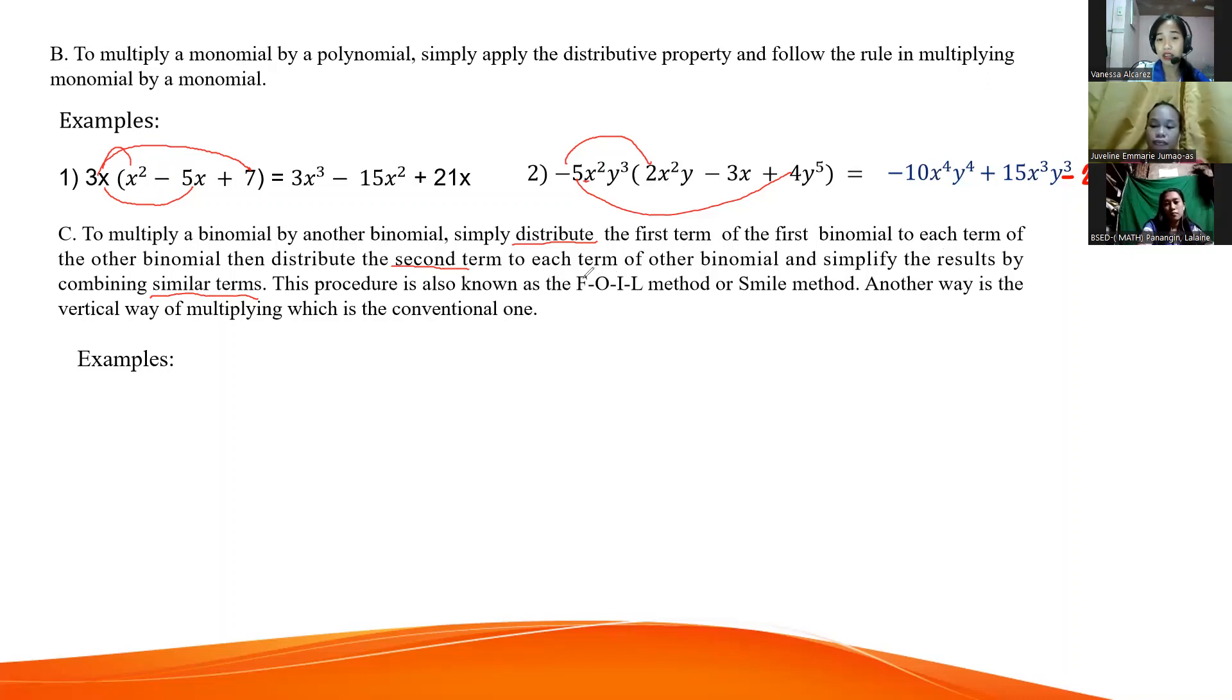The FOIL method - F stands for first, O is outer, I is inner, and L is last. Another way is vertical way of multiplying, which is the conventional one. For example, we will use the FOIL method or SMILE method.